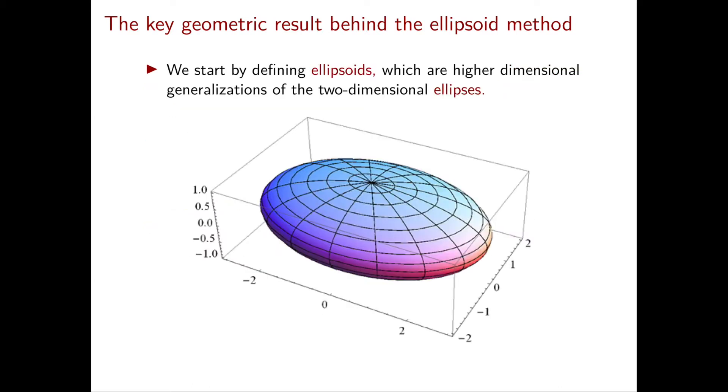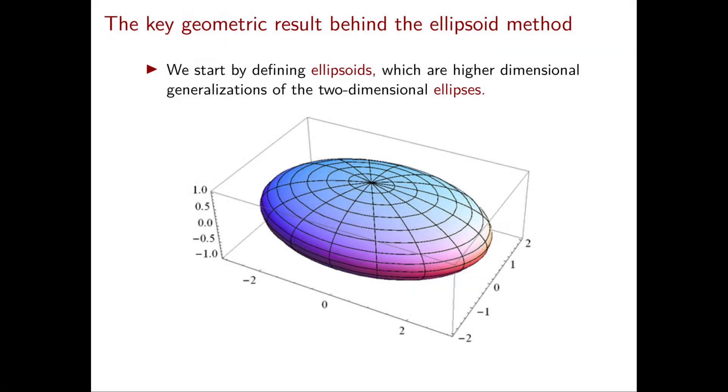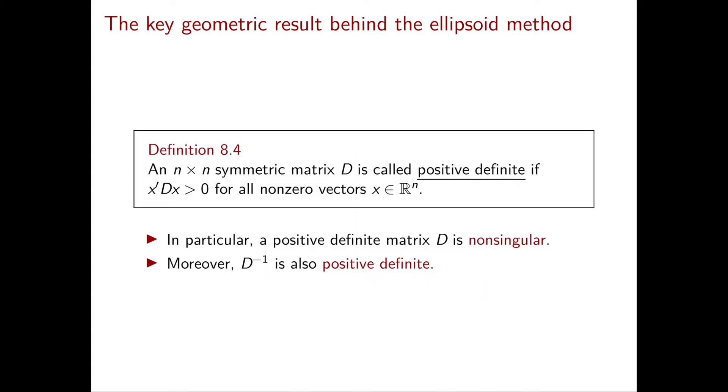The first thing we need to do, if we want to introduce the ellipsoid method, is to define ellipsoids. Intuitively, ellipsoids are the high-dimensional version of the two-dimensional ellipses. In this picture, we have an example of a three-dimensional ellipsoid. Since ellipsoids will be truly fundamental in this chapter, let's define them formally.